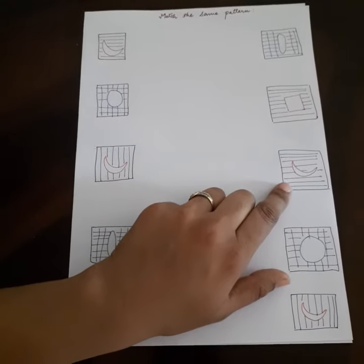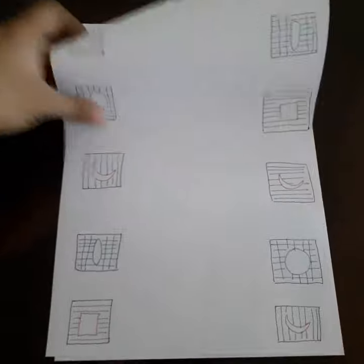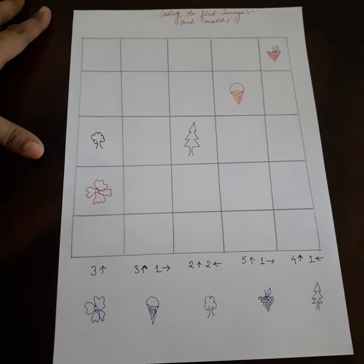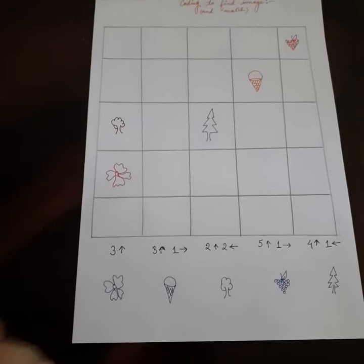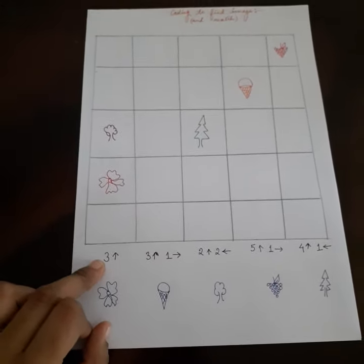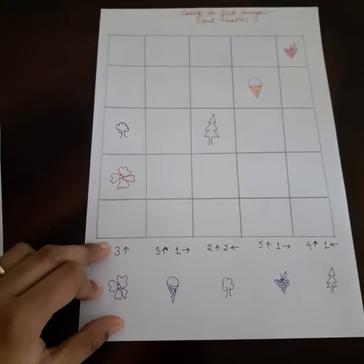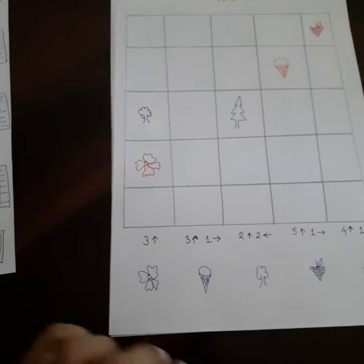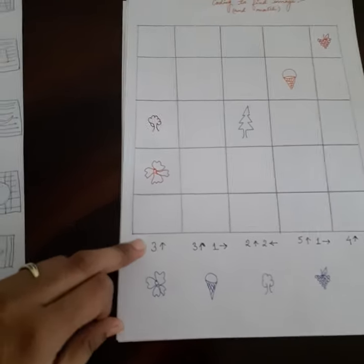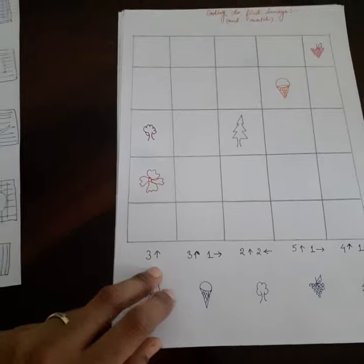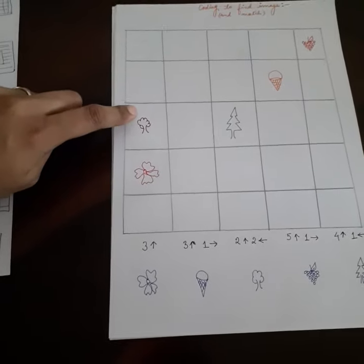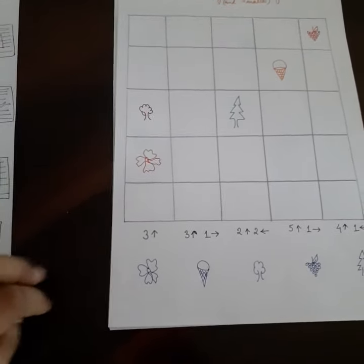The next worksheet is based on coding. I have drawn a grid with some pictures in the squares. Below, I have written the code for what he has to do in a particular column. Suppose the first one: three with the arrow in the up direction - one, two, three - he finds a tree.